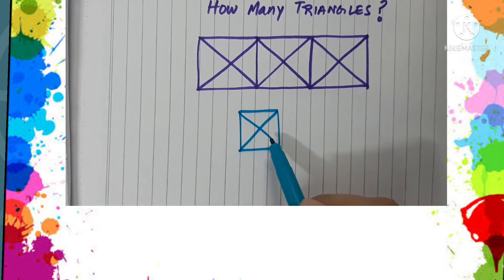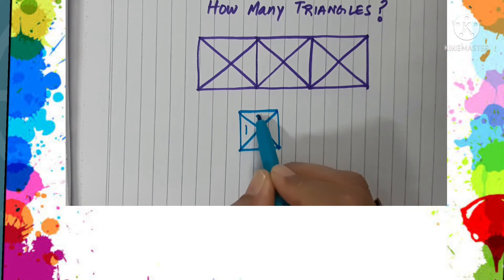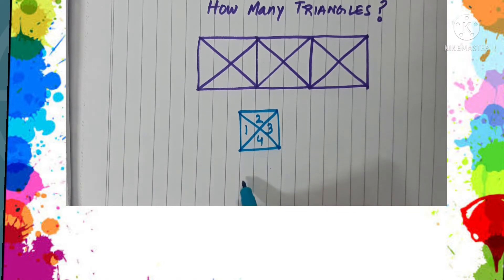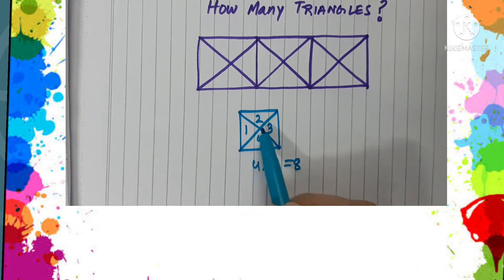So when such kind of a shape is there, then how we count the number of triangles? We see the number of parts: 1, 2, 3, 4. Four into 2 is 8. So in this square which is divided by 2 diagonals, the total number of triangles will be 8.